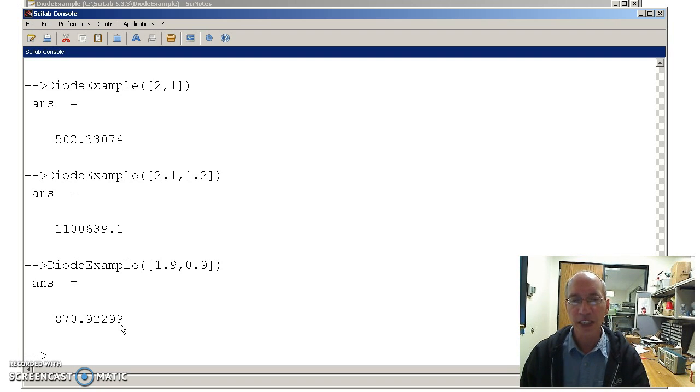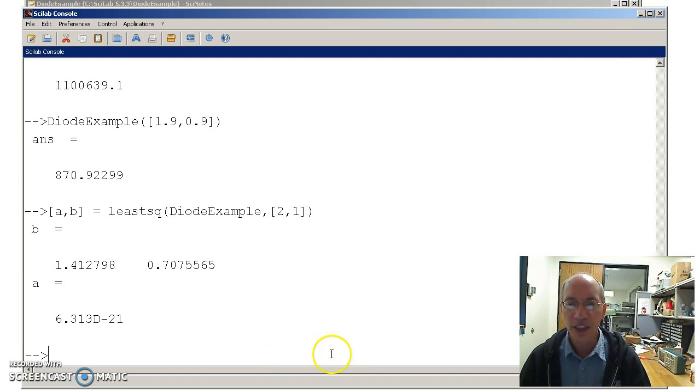Or, I can let Scilab do the guessing for me. So I'm going to return two numbers. What this does is, here's the function least square. Find the minimum of the following function. Function is defined right here. This is the subroutine diode example. Here's my initial guess. Tell it go, and it says done. The best you can do is 1.41 volts, 0.707 volts.